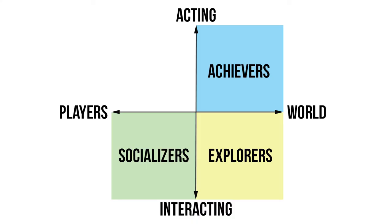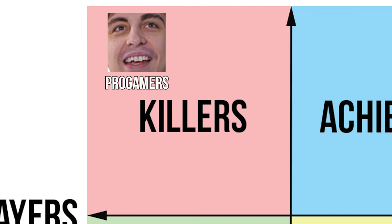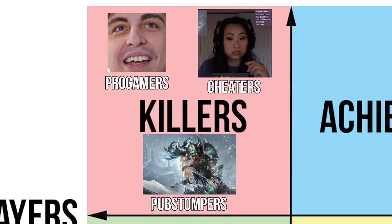Finally, if you care more about unilateral action with other players — that is, submitting other players to your power — you might fit in the last category, known as killers. If you enjoy the competitive aspect of games, owning noobs, and in some fringe cases, griefing or cheating, then you probably fit more into this category.